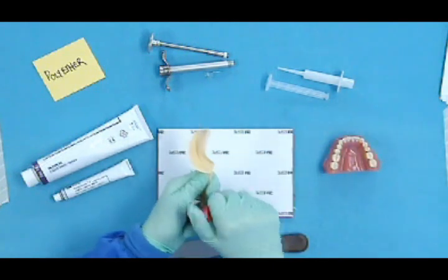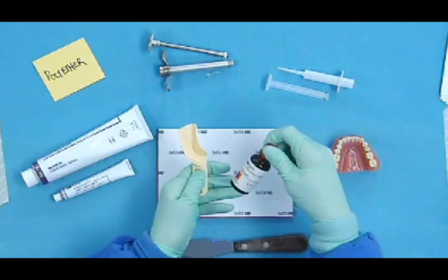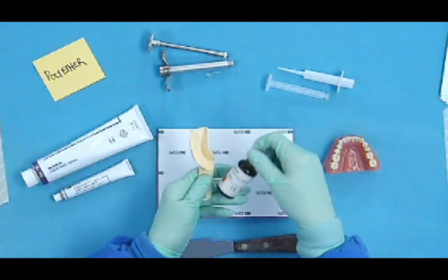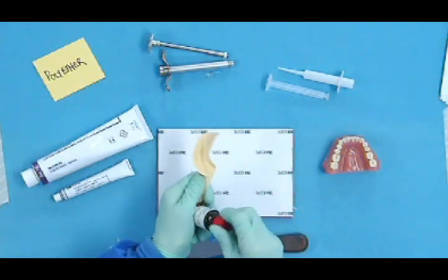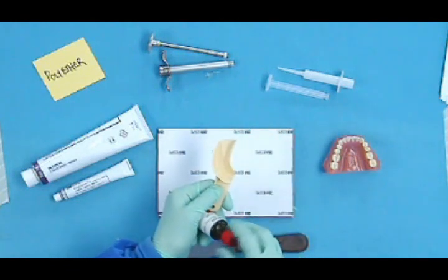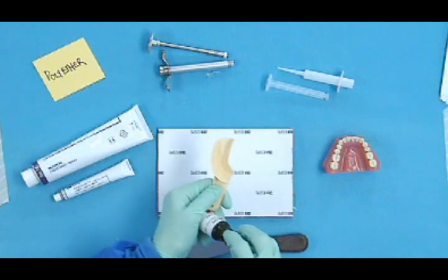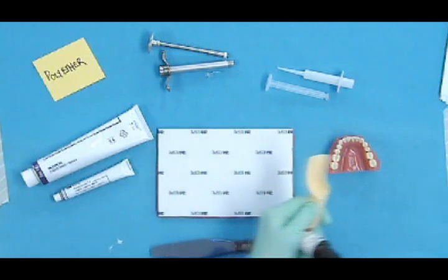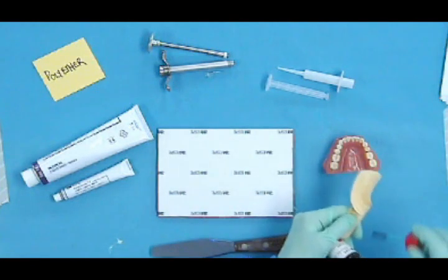Again, we have an adhesive that is specific for our polyether, and we have an impression tray that doesn't have any perforations in it, so that the material with the adhesive will stay in the tray.